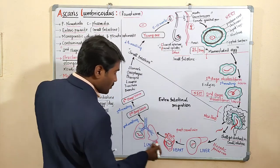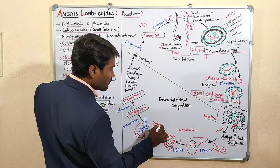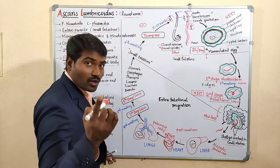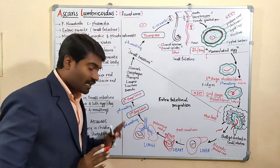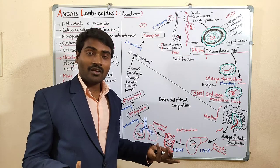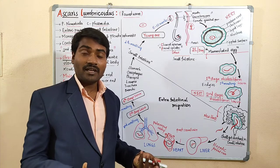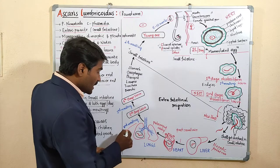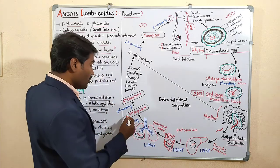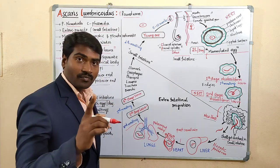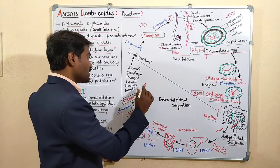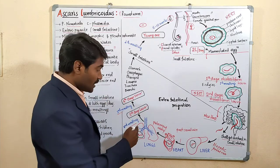From the heart, the larva goes to the lungs through the pulmonary artery. In the lungs, it settles for some time, mostly in the alveoli. Oxygen and nutrients are available, so it undergoes changes there. In the lungs, it undergoes the second molting, becoming the third-stage rhabditiform larva, and then the third molting, becoming the fourth-stage rhabditiform larva. Two moltings occur in the lungs.